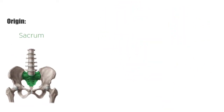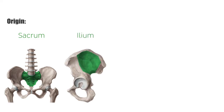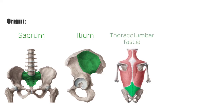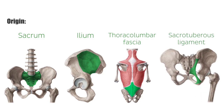The muscle originates from the sacrum, dorsal part, ilium behind the posterior gluteal line, the thoracolumbar fascia, and the sacrotuberous ligament.